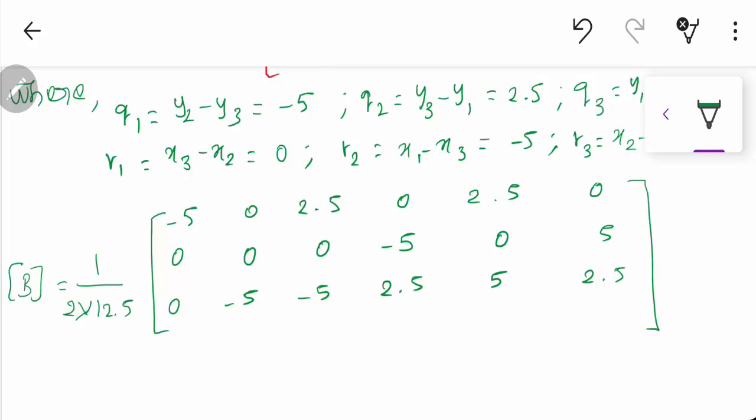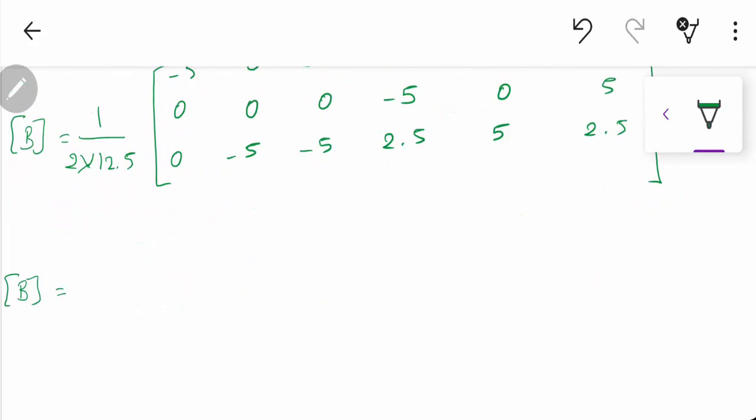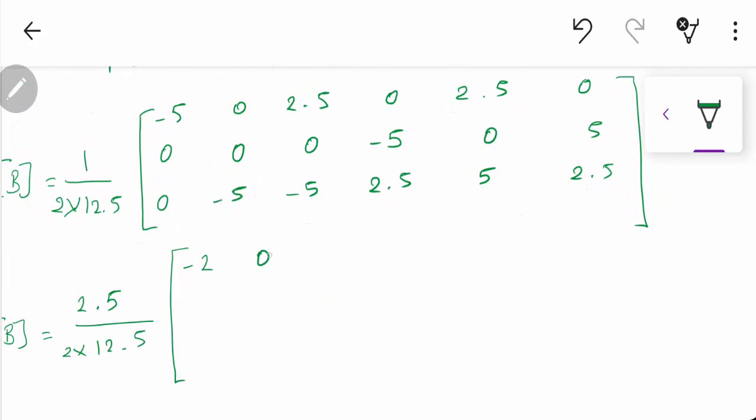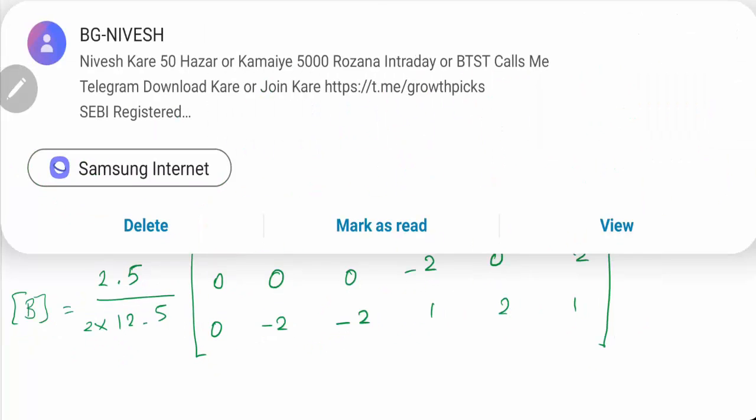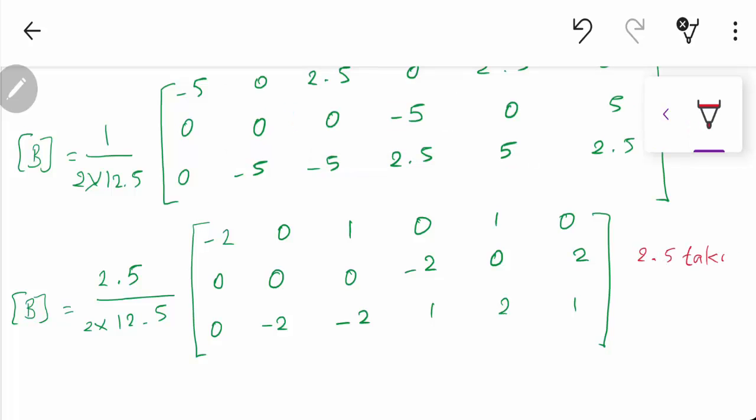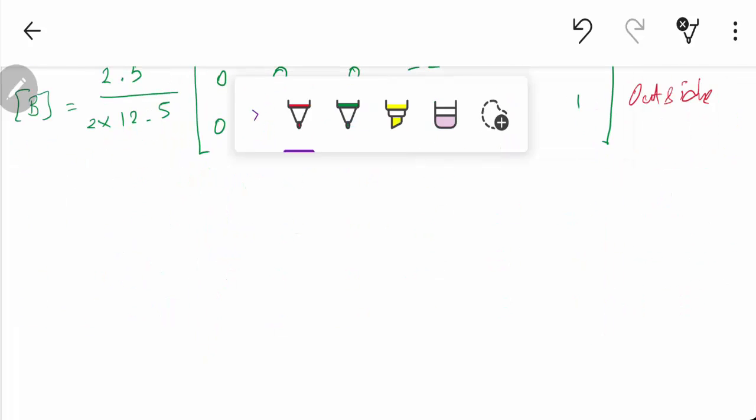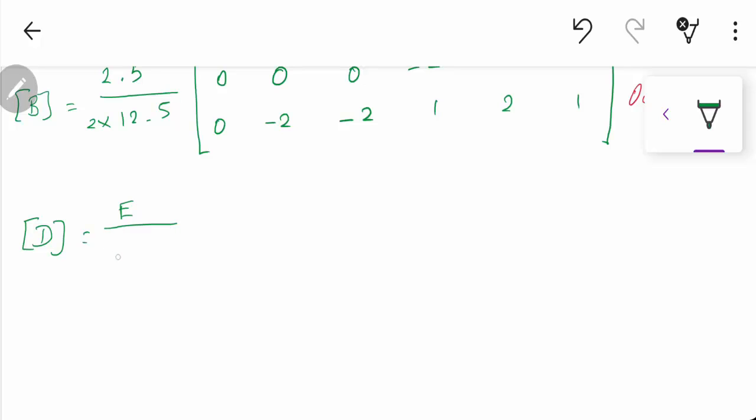So now we got the matrix. I am taking 2.5 outside here and reducing the values.